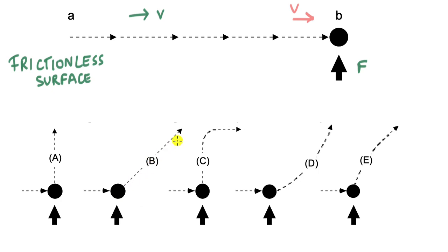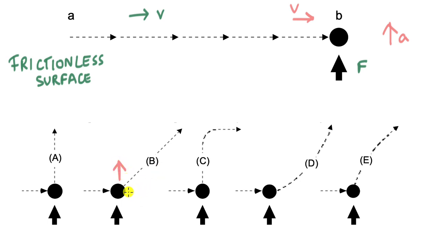If you look at option B, the path is at a certain angle. When there is a force that acts on the ball at point B, there is an instantaneous acceleration in the upward direction, and because of that some velocity is gained in that direction. After point B, option B makes sense because there is a vertical velocity gained, there is already a constant horizontal velocity, and as a result the ball moves at a certain angle — the resultant of these two velocities.